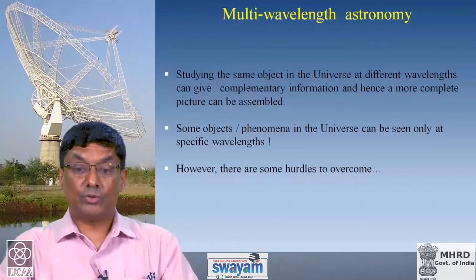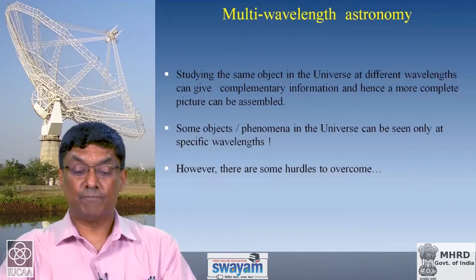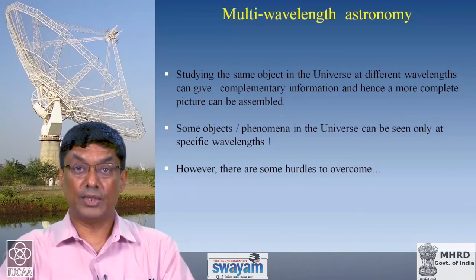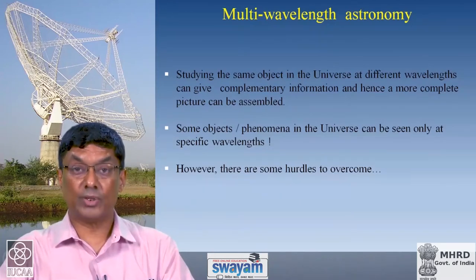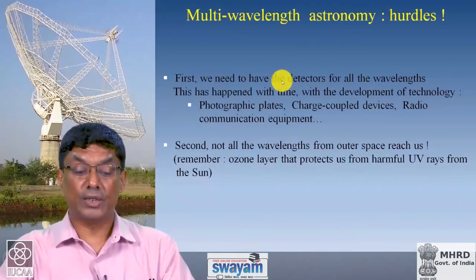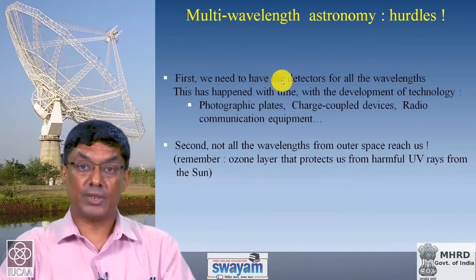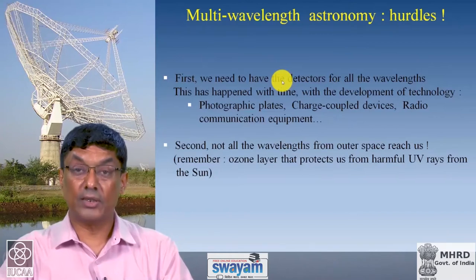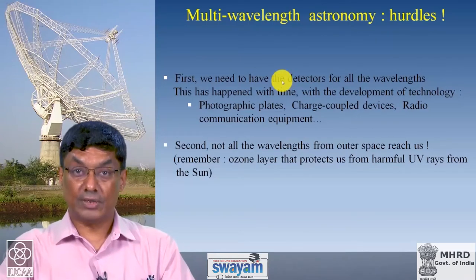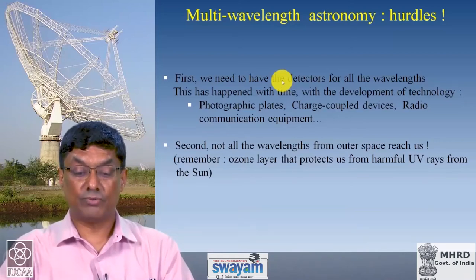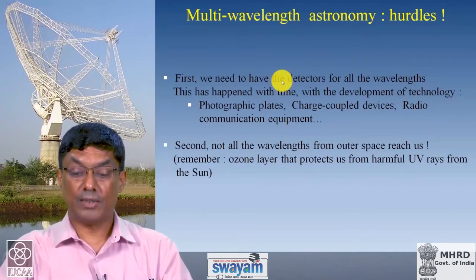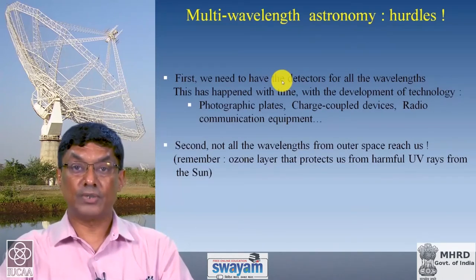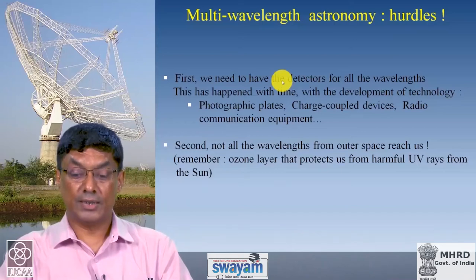This brings us to multi-wavelength astronomy — clearly there is a lot to be gained by doing astronomy at multiple wavelengths. The question is how easy is that to do? We come up against a couple of hurdles. The first is that you need the detectors: our eyes are the natural detectors for optical wavelengths, but you do not have natural detectors for other wavelengths. This had to wait for technology — detectors for different wavelengths had to be discovered, built, and utilized.